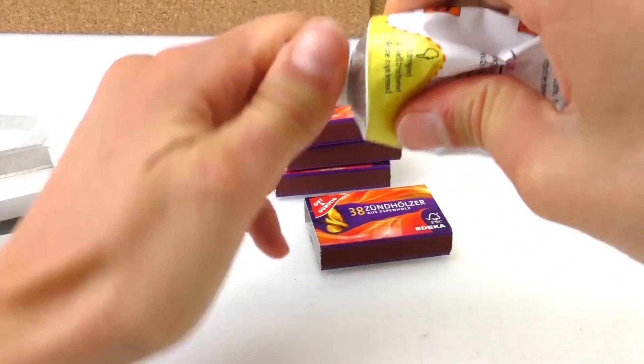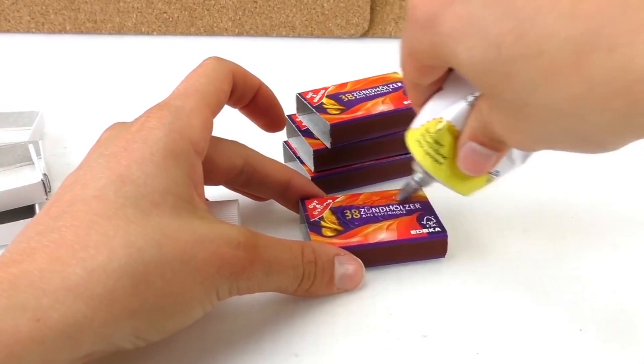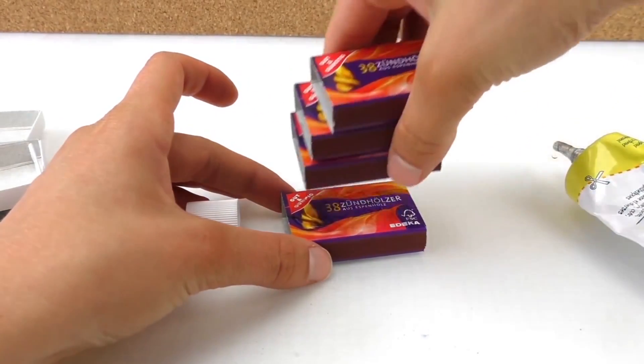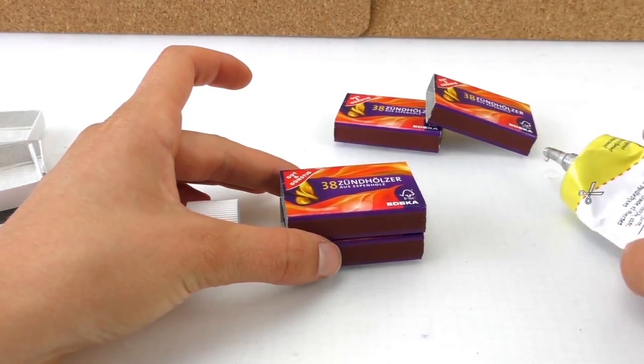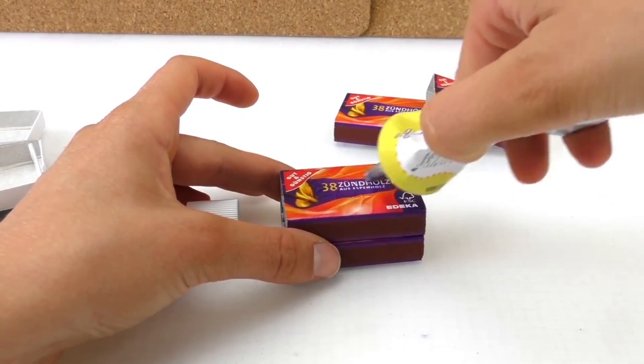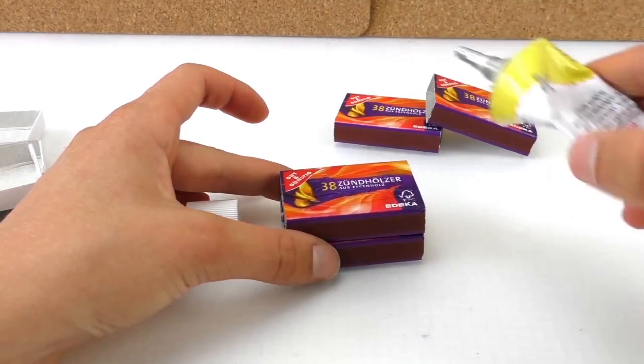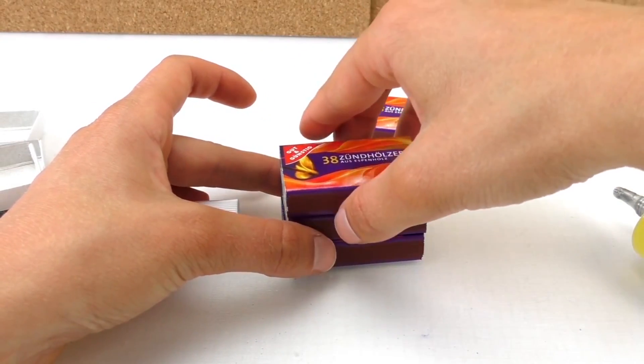We're going to grab the glue and paste one on top of another. When everything is stuck, then we're going to do the next step. Make sure it's all dried out.